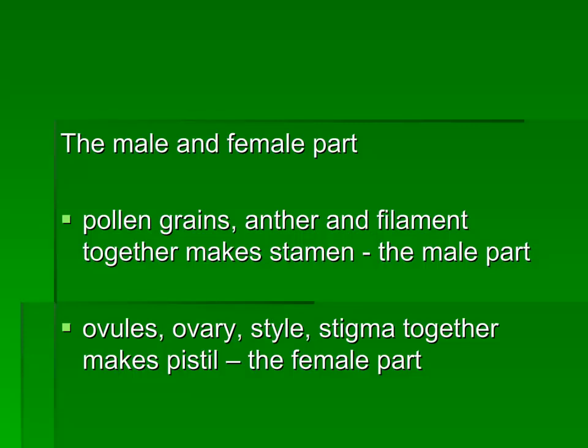The male and female parts: pollen grains, anther, and filament together make the stamen, the male part of the flower. Ovules, ovary, style, and stigma together make the pistil, the female part of the flower.